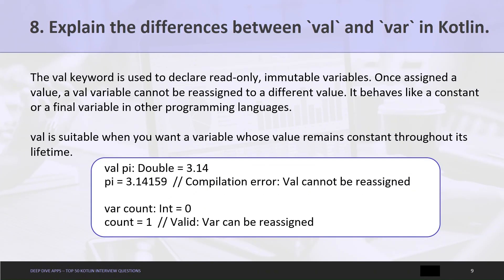Question 8: Explain the differences between val and var in Kotlin. The val keyword is used to declare read-only, immutable variables. Once assigned a value, a val variable cannot be reassigned. It behaves like a constant or final variable in other programming languages, and is suitable when you want a variable whose value remains constant throughout its lifetime. The var keyword, on the other hand, declares a mutable variable that can be reassigned with a new value.